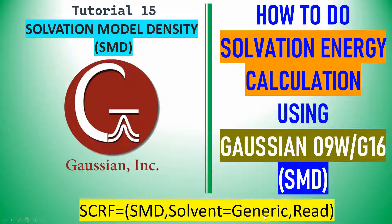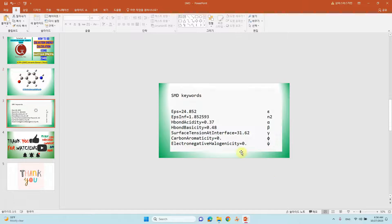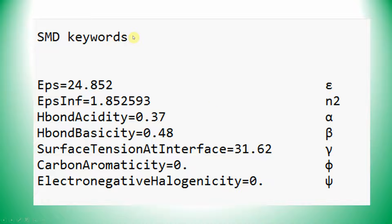The general keyword for the SMD model is: SCRF=SMD, solvent=generic, read. These are the important SMD keywords for solvation energy calculation. The key parameters are: EPS — the dielectric constant of the solvent; EPSINF — the refractive index squared; alpha — hydrogen bond acidity; beta — hydrogen bond basicity; gamma — surface tension at the interface; pi — carbon aromaticity; and psi — electronegativity/halogenicity.